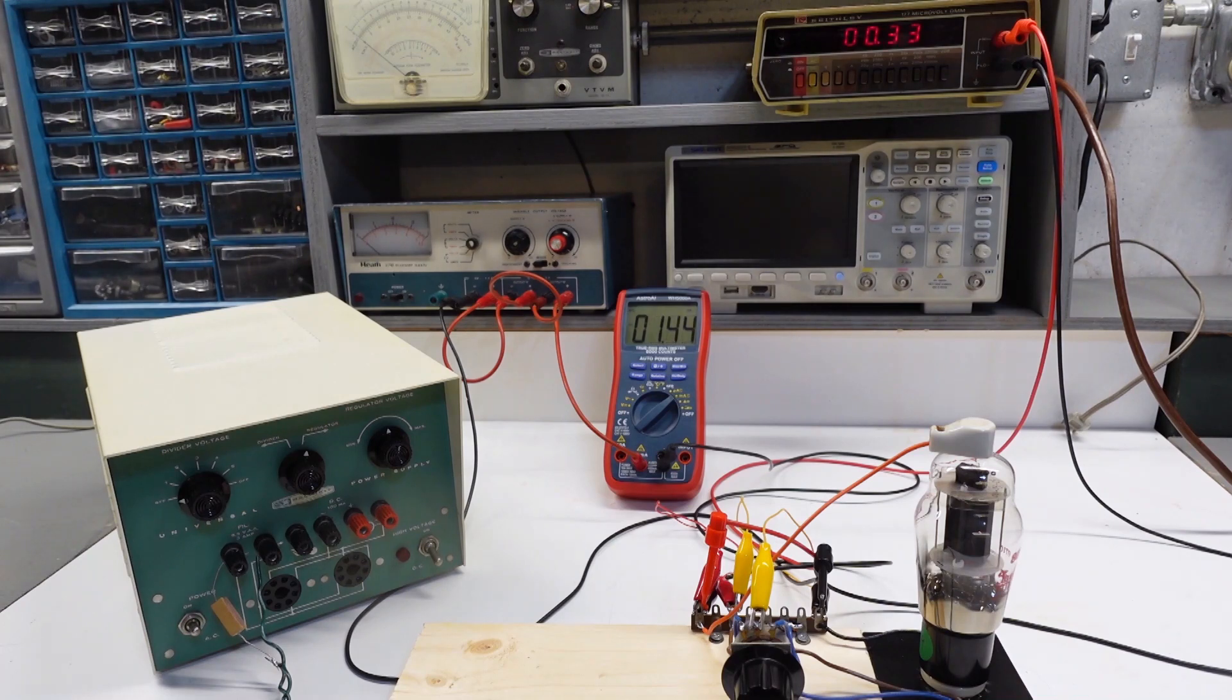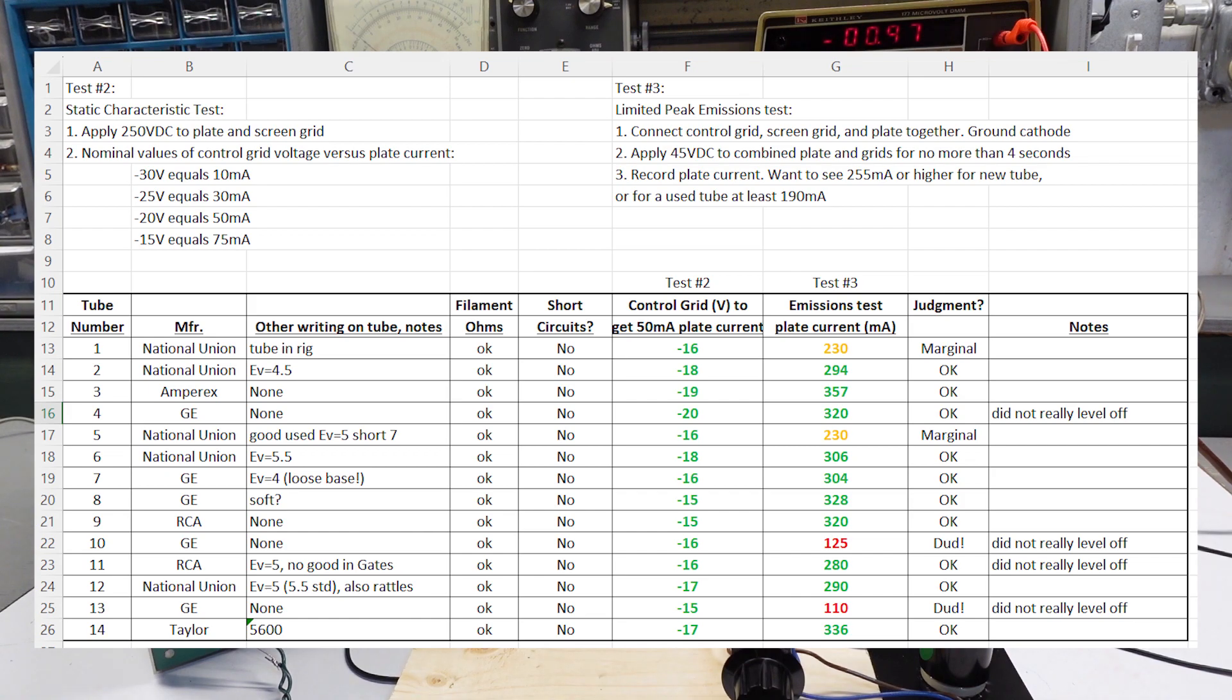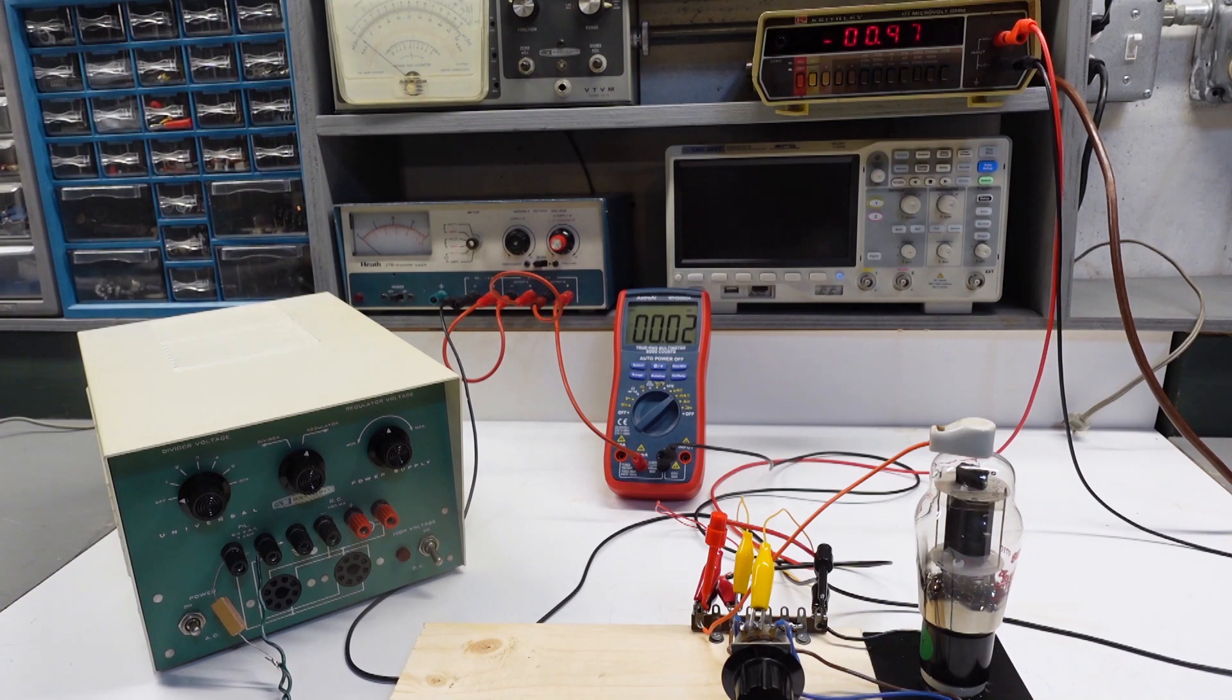All right, that's all there was to it, about 336 milliamps. And I'll put on screen now the results for all 14 tubes. And as it turns out, 10 of them had current of at least 255 milliamps. So they're exceeding the threshold that GE established for a new tube. Two of them are in between a used tube, meaning 190 milliamps and 255 milliamps for a new tube. But two of them were below 190 and actually quite a bit below. So I'm going to consider those tubes duds and unlikely to work correctly in this Adventurer. But the positive side is, after all of these series of tests, it looks like I have at least better confidence now that I should have 10 tubes here to pick from to get this Adventurer back on the air.